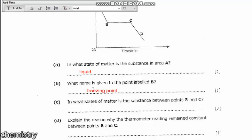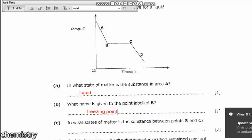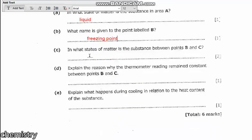In what states of matter is the substance between B and C? Like I said, since we are coming from liquid to solid, between B and C we are going to have two states of matter. That is both liquid and solid.